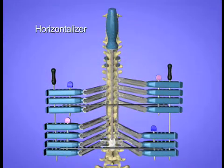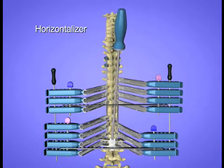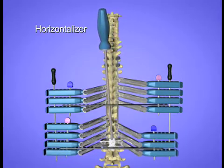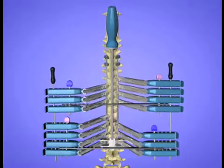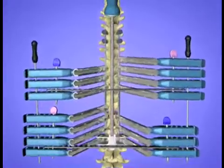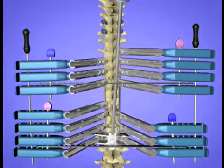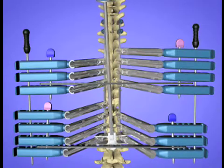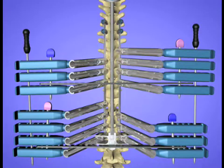A vertebral horizontalizer instrument can then be used to level non-level vertebrae, providing simultaneous single-level compression and distraction with no net spinal cord elongation. A T-handled horizontalizer is available, if so desired.